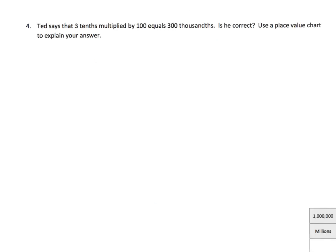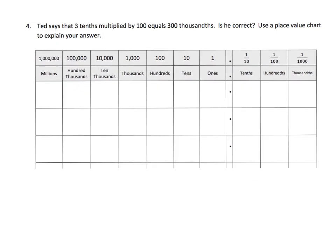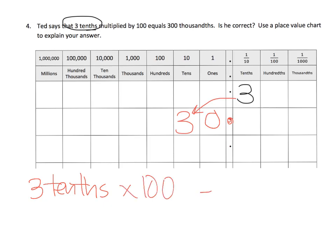Real briefly, let's put this into practice using words with a word problem. So it says, Ted says that 3 tenths multiplied by 100 equals 300 thousandths. Is he correct? Let's use a place value chart. So here's our place value chart. And it says, here's 3 tenths, because it says so. Now we're going to multiply that by 100. Well, we know that if you multiply 3 tenths by 100, we know that that 3 is going to move 2 columns to the left. And so what goes in this blank space right here? A 0. So 3 tenths multiplied by 100, that equals 30.